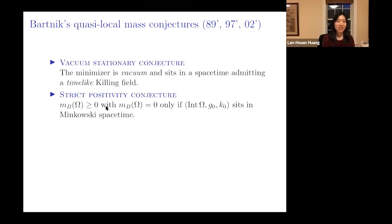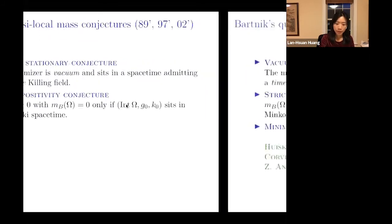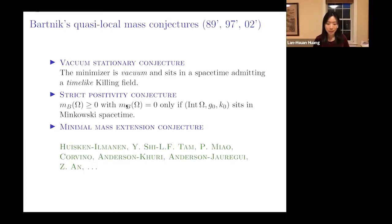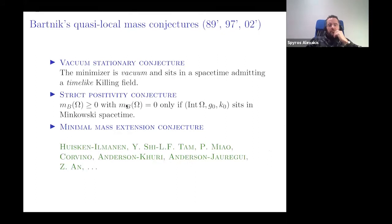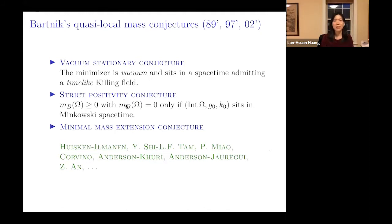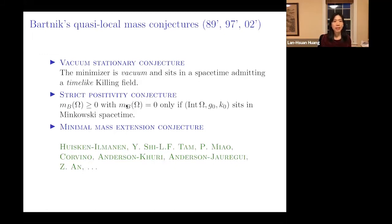There is also a strict positivity conjecture: if the Bartnik mass is zero, then the region must sit in Minkowski spacetime. We were looking at both the vacuum stationary conjecture and the strict positivity conjecture. There is also a less-studied conjecture — the minimum mass extension conjecture — about whether a minimizer exists at all. The existence of a minimizer is always a harder question. There is a lot of work on these conjectures, and Bartnik himself has modified the statements over time as people keep finding counter-examples requiring refinement.